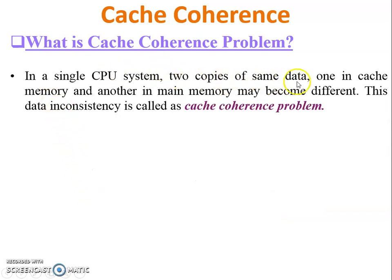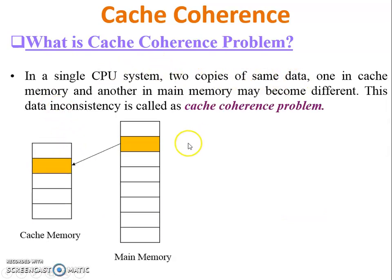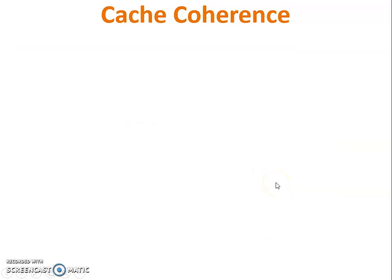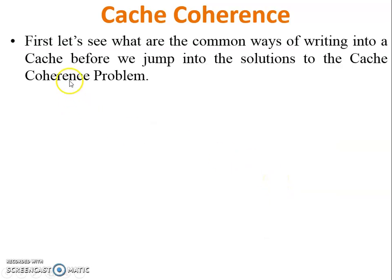In a single CPU system, there are two copies of the same data — one in cache memory and another in main memory. These two copies may become different over time. When both copies are different, it shows data inconsistency. This is called the cache coherence problem, as shown in the second diagram.